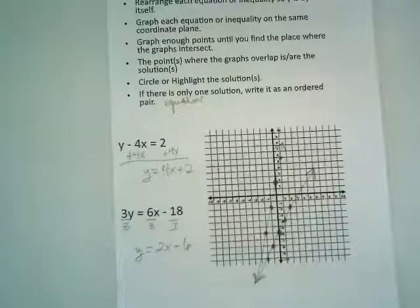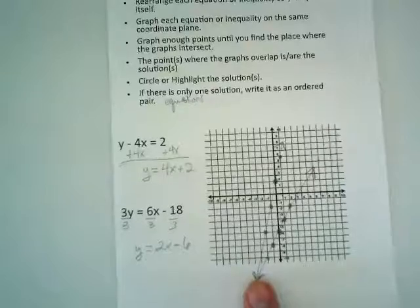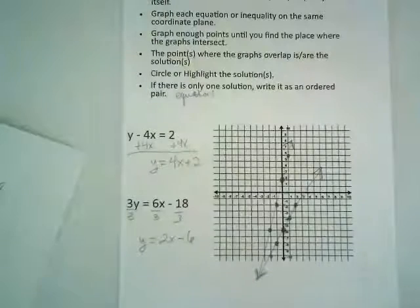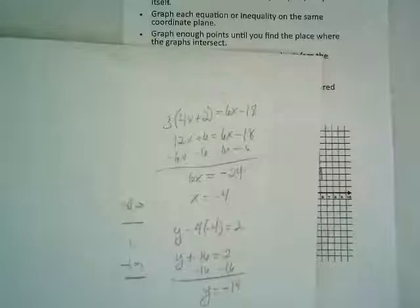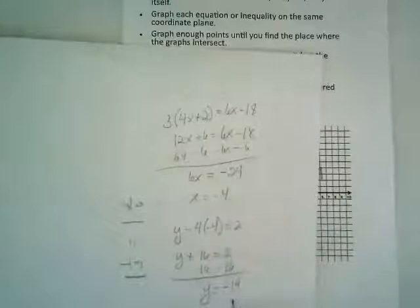Again, not my favorite method. Are we getting a clear picture of what its x-y pair is here? No. But I did solve this earlier with substitution. Because in my opinion, it's the best method. And I got negative 4 and negative 14.